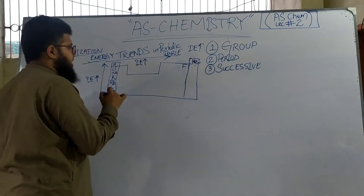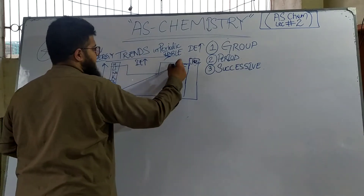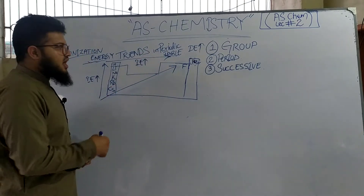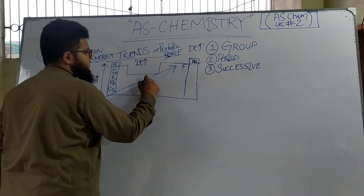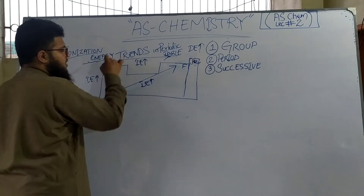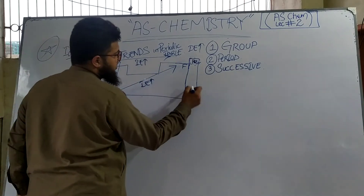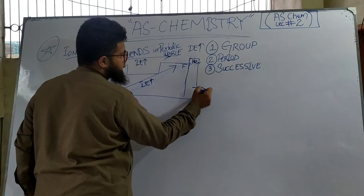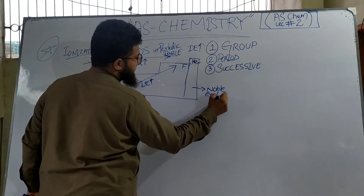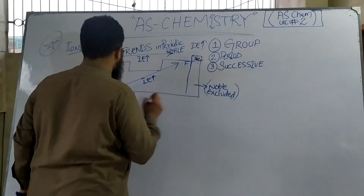If you were to ask what happens to ionization energy going diagonally, the answer is still the same — it will increase. Why? Because going diagonally means going up the group and across the period. Now, in these trends, the noble gases are excluded because they are an exception with a slightly different trend.